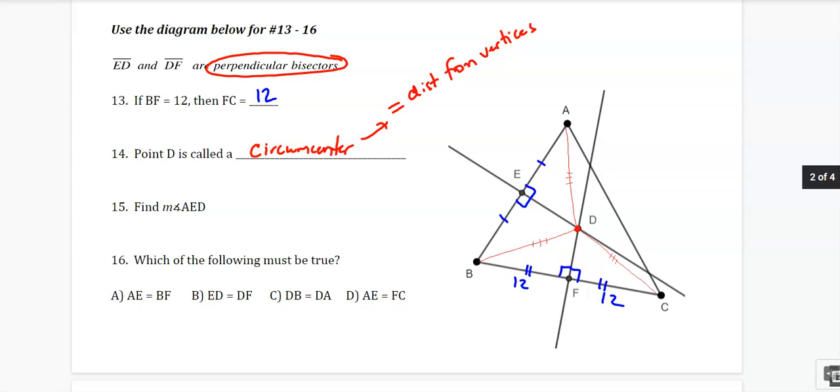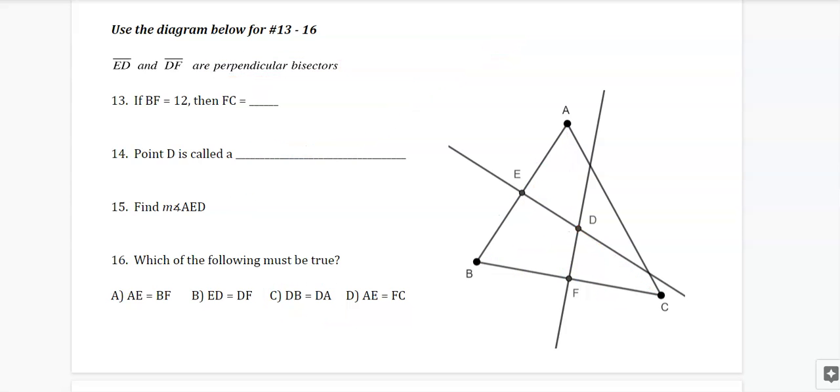The big thing to know about circumcenter is he should be equal distance from the vertices, from the corners. So I should have this distance, this distance, and that distance should all be equal because he's a circumcenter. So I think that will help me with 16, which is the following must be true. I think it is this one right here. DB has to equal DA. Those are the red lines I have up there. Find the measure of AED. We've already got that. That's chilling right here at 90.